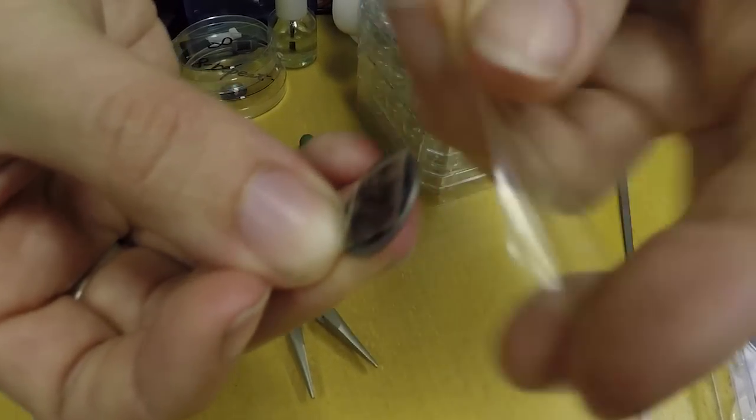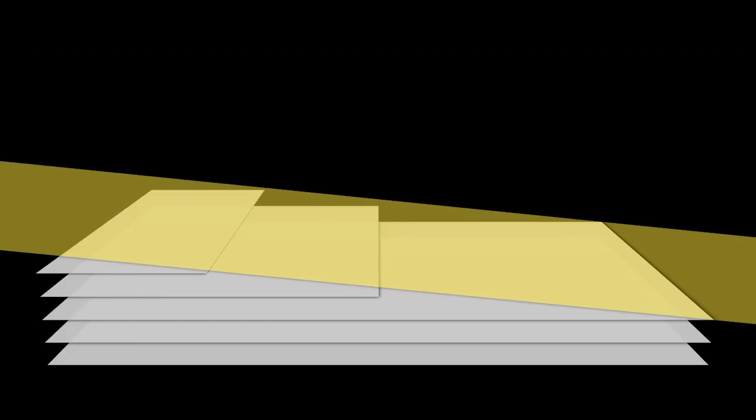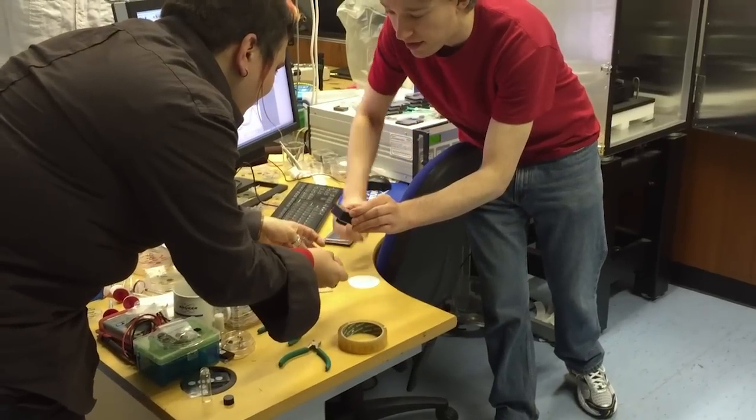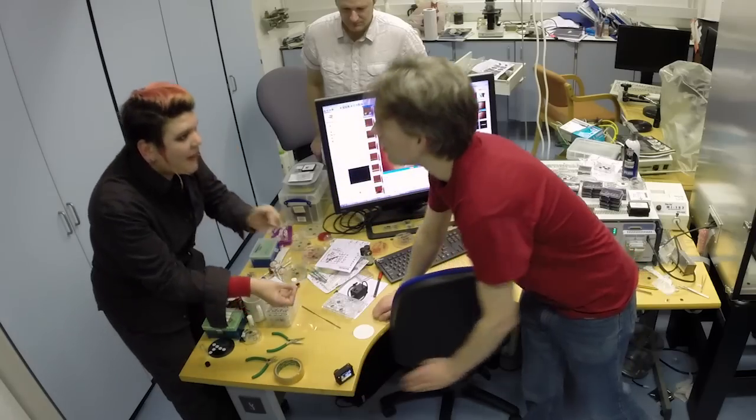And then peel it off. And can you see the faint outline? There is. There is a faint outline of a square on there. Which is, is that just one atom thick layer of mica? Yep.